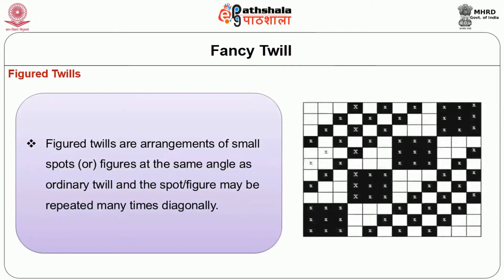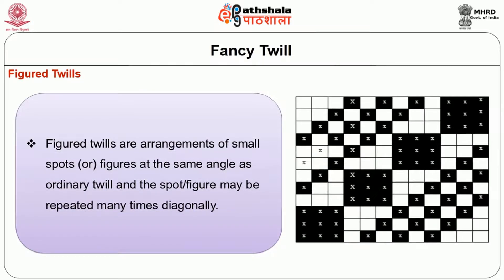The third variety of fancy twills is the figure twills. These are arrangements of small spots or figures that are at the same angle as the ordinary twill, and the spot or figure may be repeated many times along the diagonal line. An example is illustrated in figure 1.3 where spots are repeated four times and the complete repeat is on 12 ends and 12 picks. The diagonal block repeats on 3 by 3 along the right-hand diagonal line with the regular weave alongside.